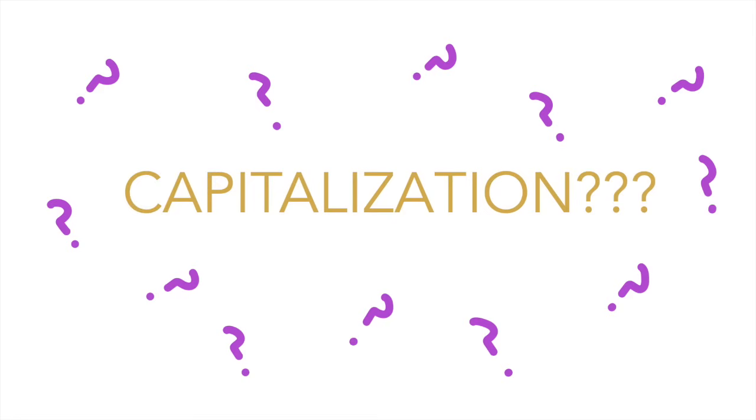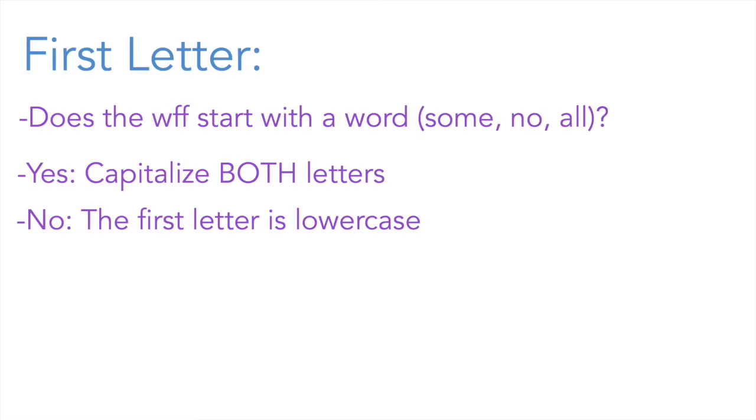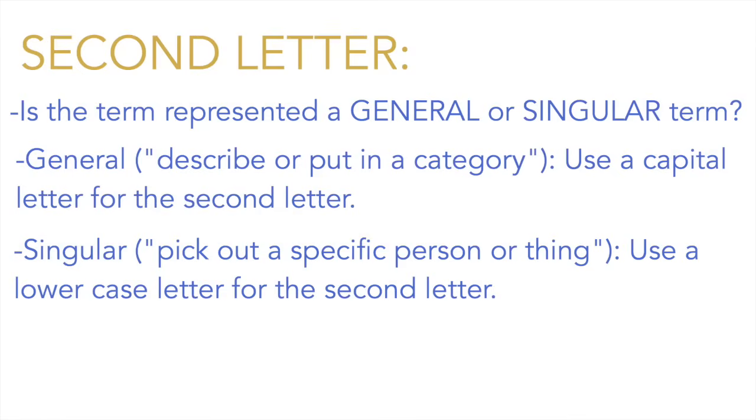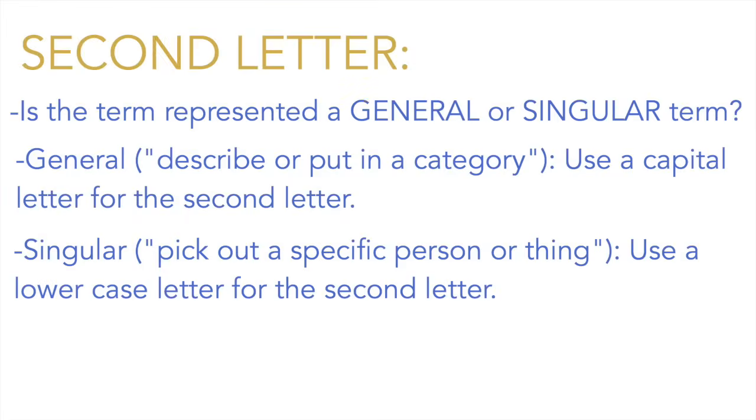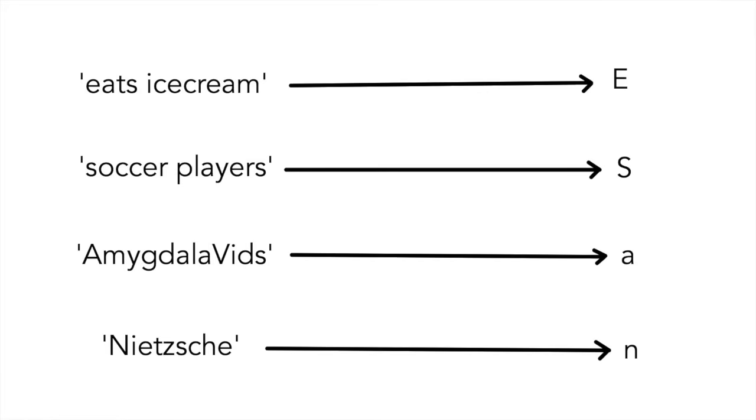Now, there's also the issue of capitalization, because as you've probably noticed, some letters are capitalized and others aren't. So in each woof, there are two letters. Now, for the first letter, if the woof begins with a word such as some, all, or no, then both letters get capitalized. However, if the woof begins with a letter and not a word, then the first letter is lowercase. But in this second case where the first letter is lowercase, what do we do about the second letter? Well, if the term you're representing is a general term, then you use a capital letter. So, for example, eats ice cream would be a capital E, and soccer players would be a capital S. Now, if the term you're representing is singular and points to a specific person or thing, then you should use a lowercase letter. For example, amygdala vids would be a lowercase a, and nietzsche would be a lowercase n.